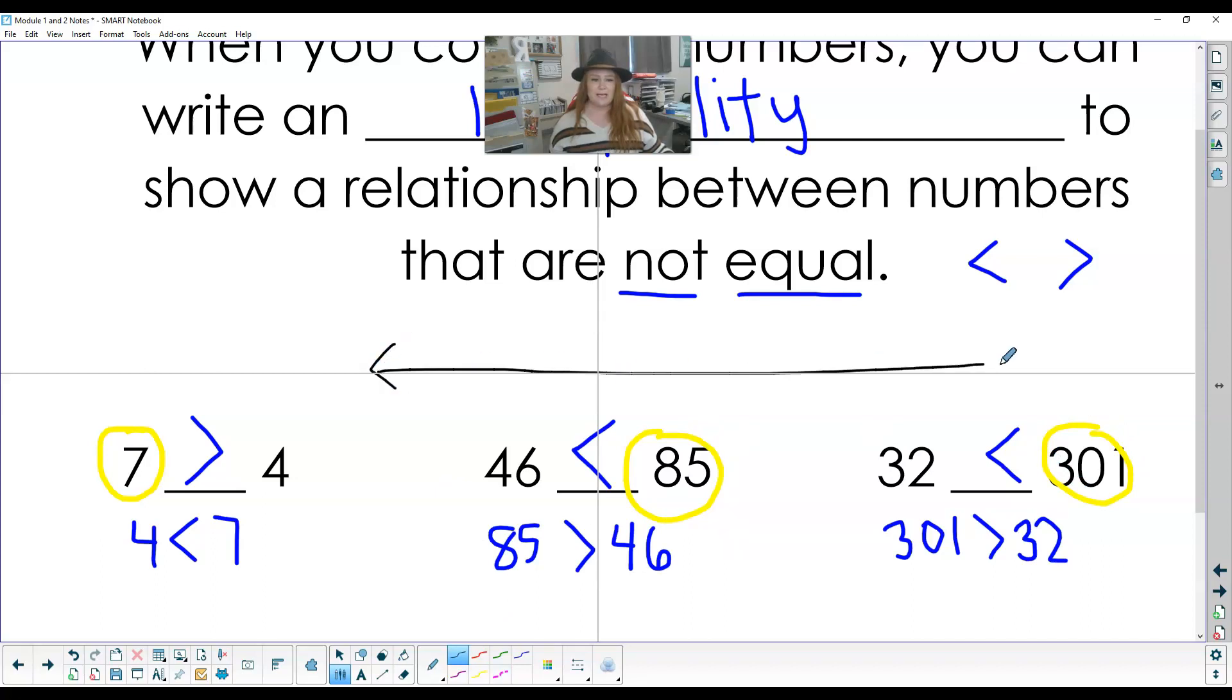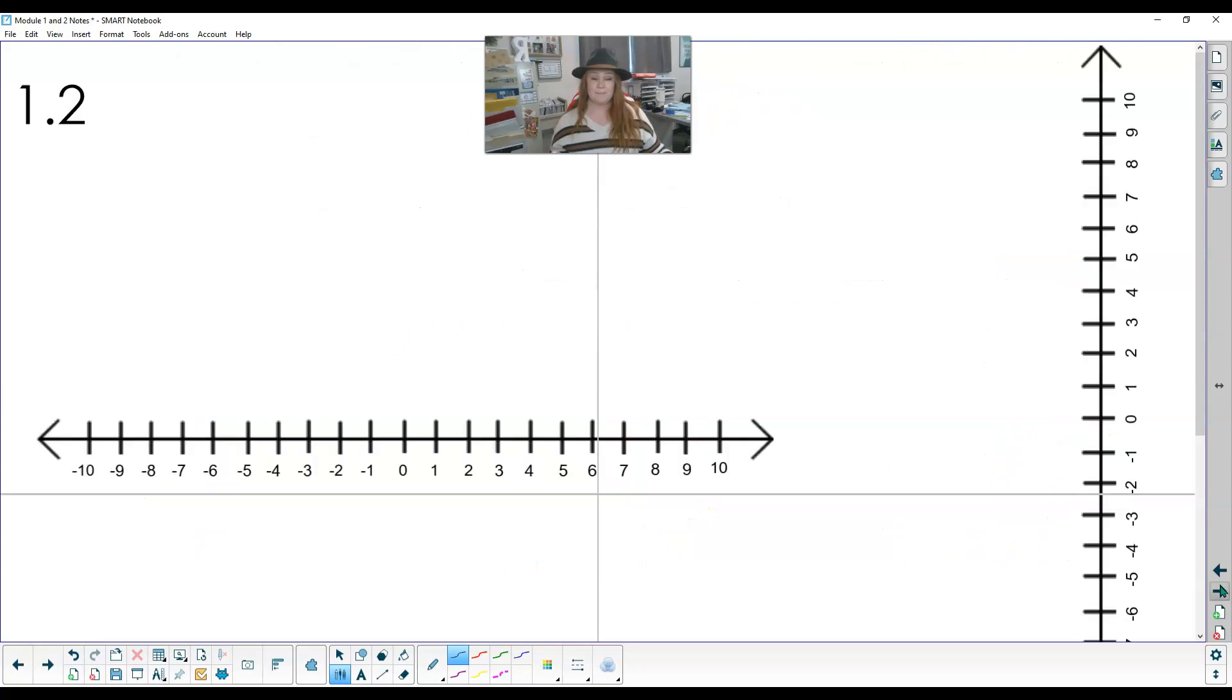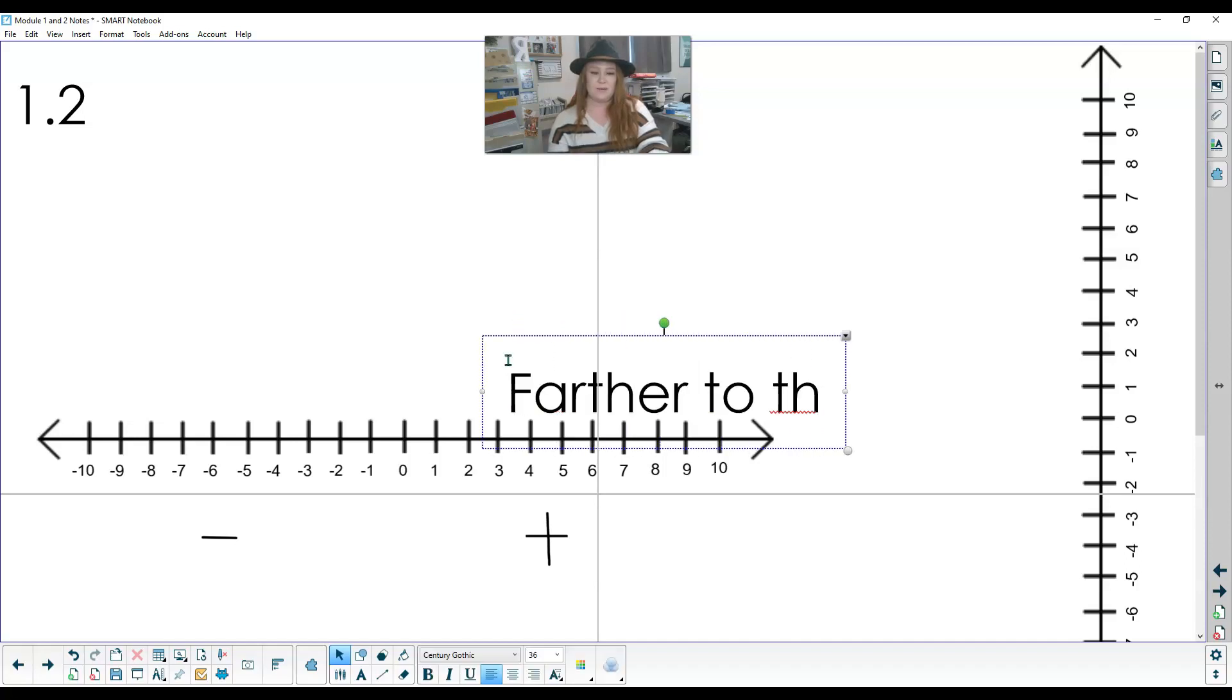So all of these numbers that were bigger, 7, 85, 302. If I put those numbers on a number line, they are farther to the right. So they're more to the right. They're positive and they're farther over to the right. And that's how I can know that they are bigger. More to the right is bigger. Farther to the left is smaller.